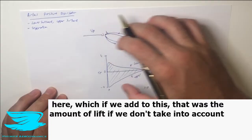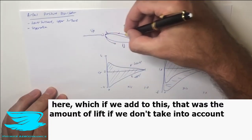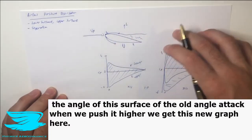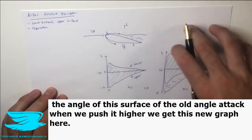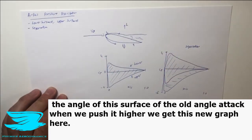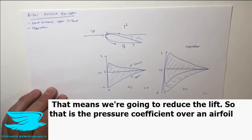If we add to this, that was the amount of lift. If we take into account the angle of this surface at the old angle of attack, when we push it higher we get this new graph here. That means we get a reduction in the lift.